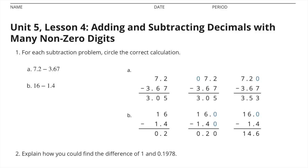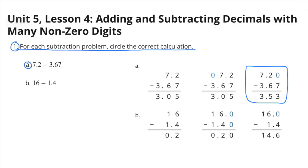Unit 5, Lesson 4: Adding and Subtracting Decimals with Many Non-Zero Digits. Number 1: For each subtraction problem, circle the correct calculation.